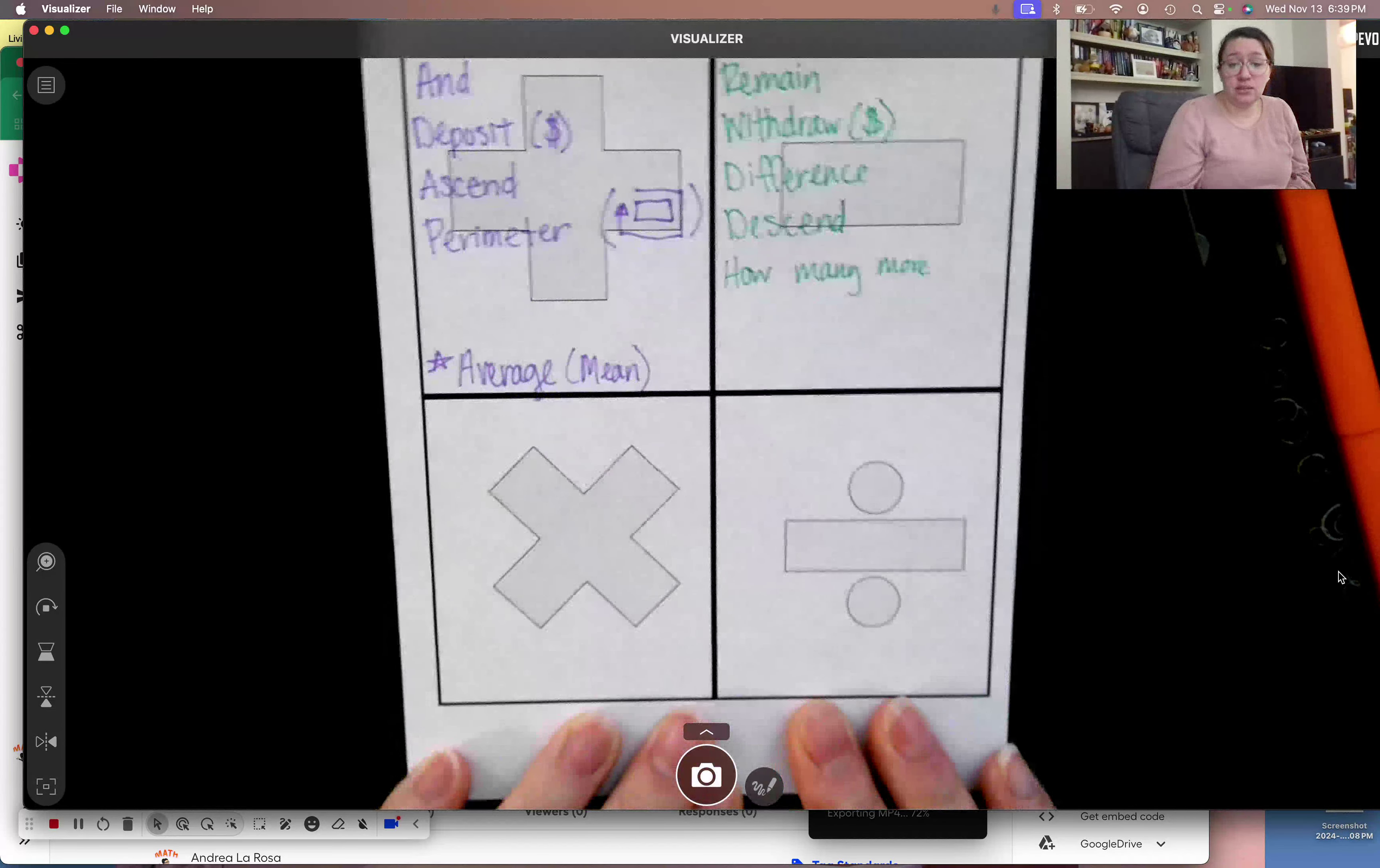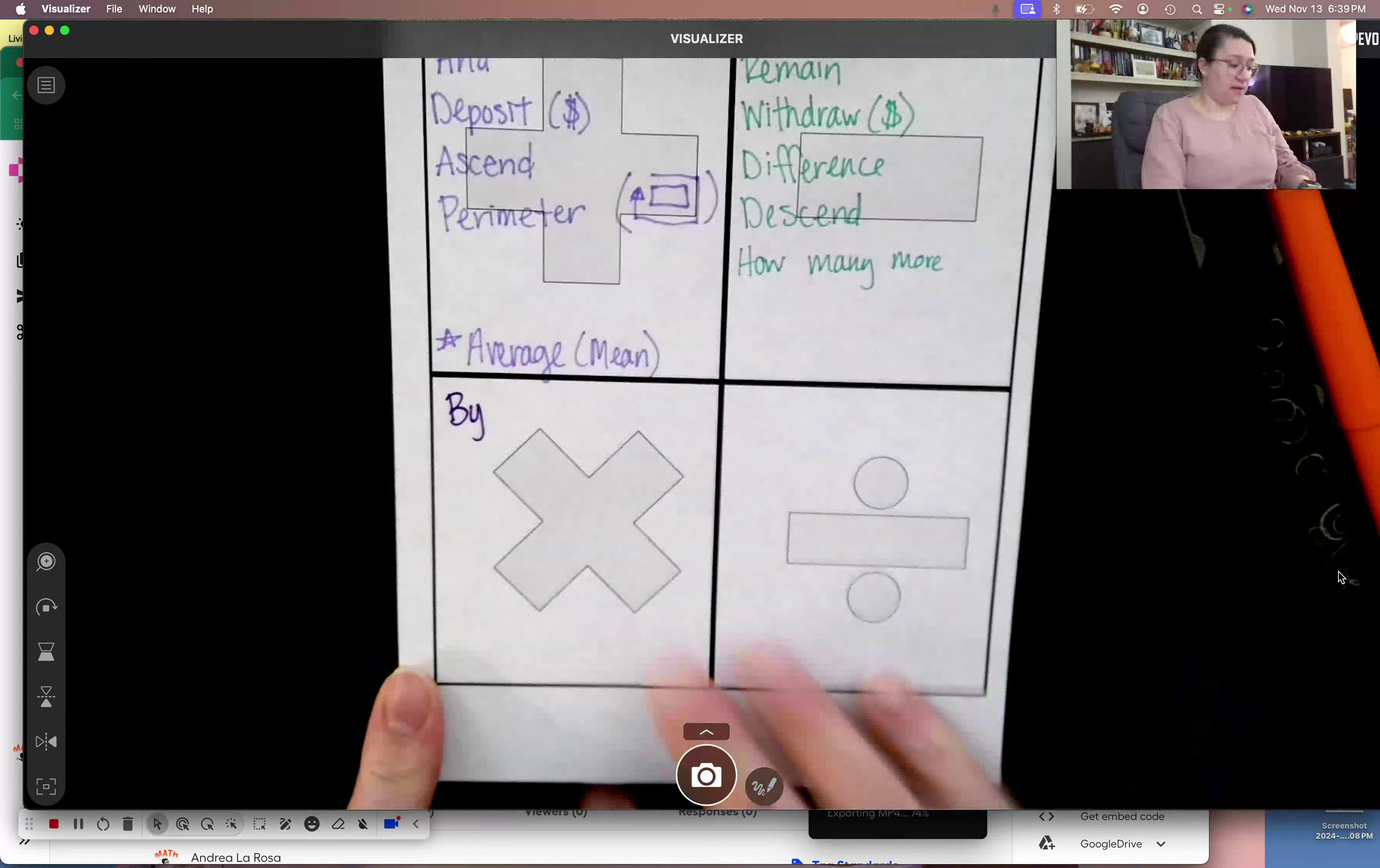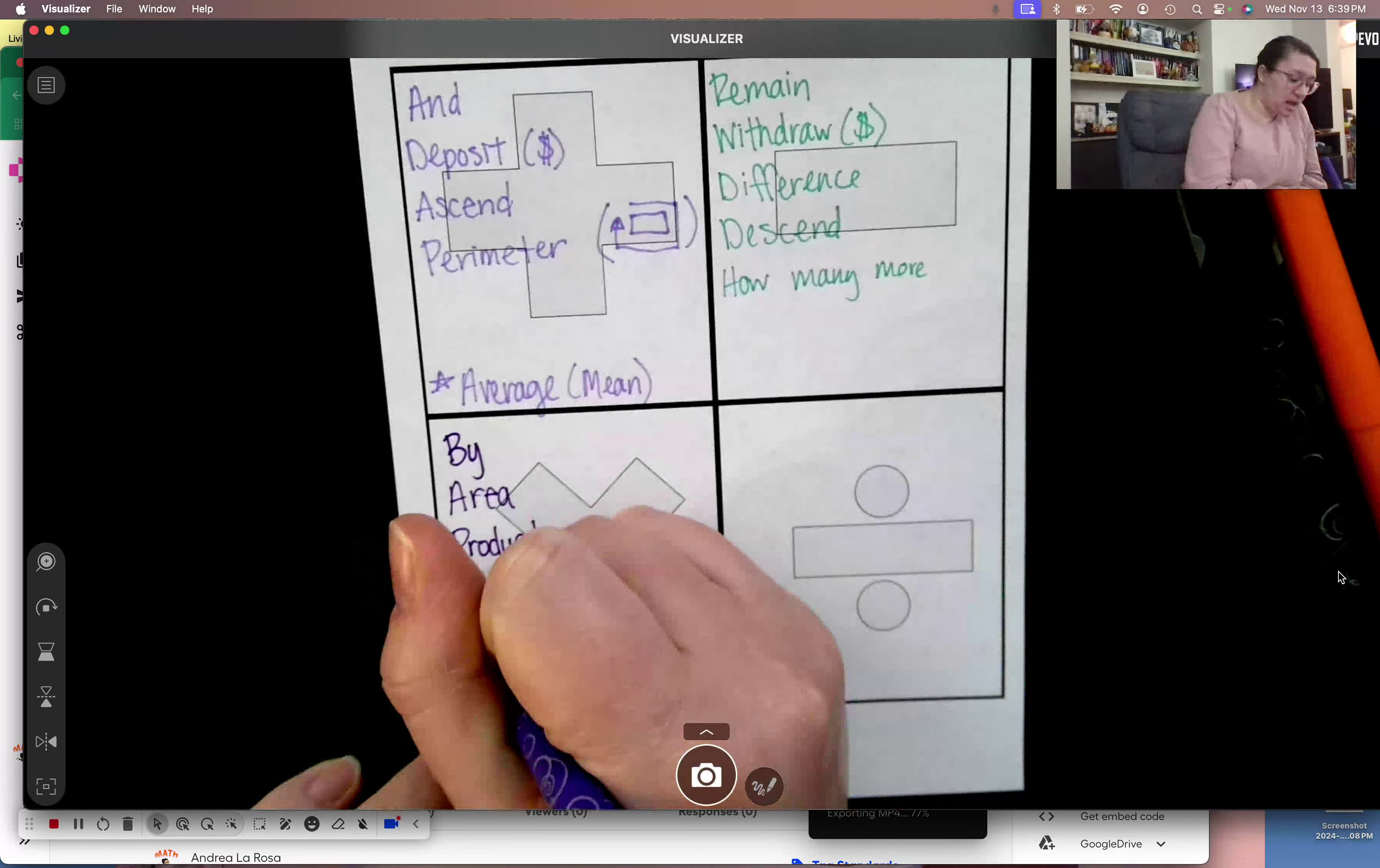I'm moving on to multiplication. The word by. You're going to see that a lot like architects and engineers when they're trying to look at the area of stuff or the dimensions of stuff or like the volume of things. Like if I have this piece of paper, I could say that this piece of paper is five and a half by eight and a half inches. And I could find the area because by means to multiply those numbers together. Again, just like I gave that example, area also means multiplication. Product is the answer to a multiplication problem. I multiply my factors to get my product, the answer.